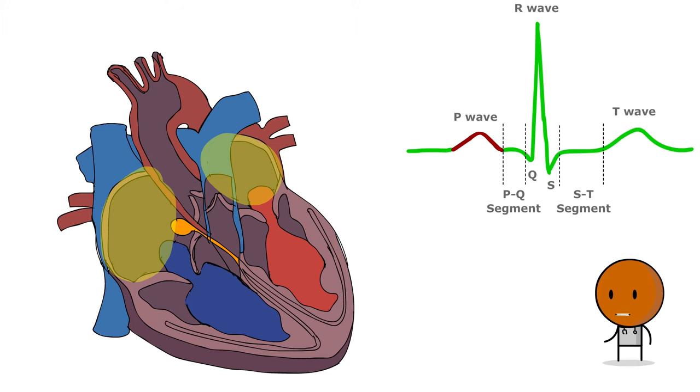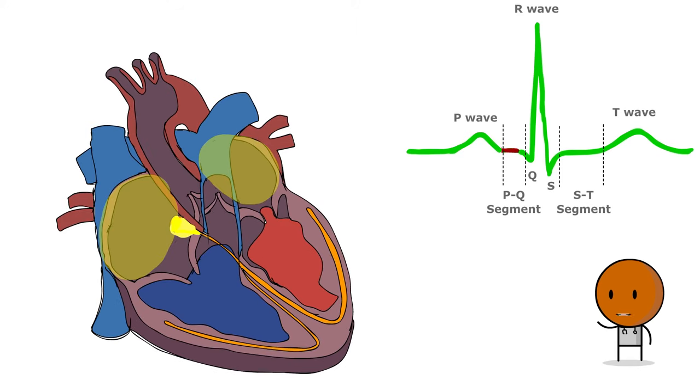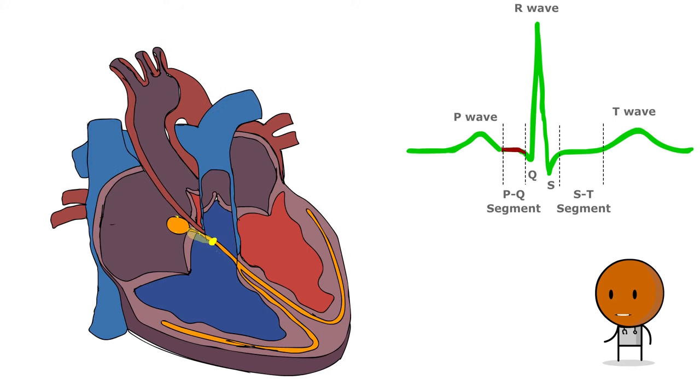The interval between the P wave and the QRS complex, designated as the P-Q segment, denotes the transmission time from the SA node to the AV node.